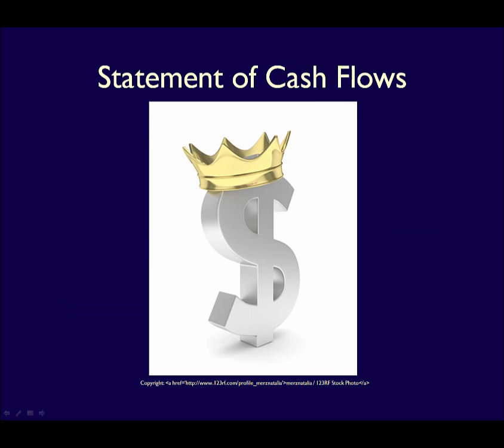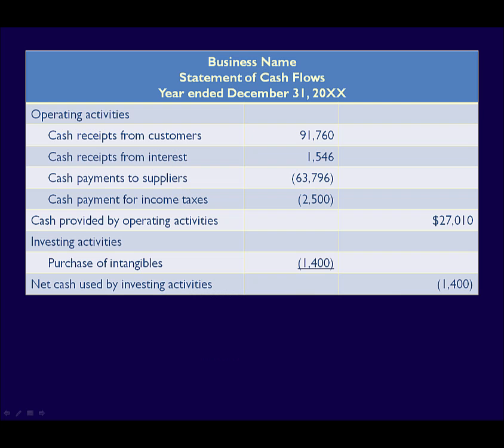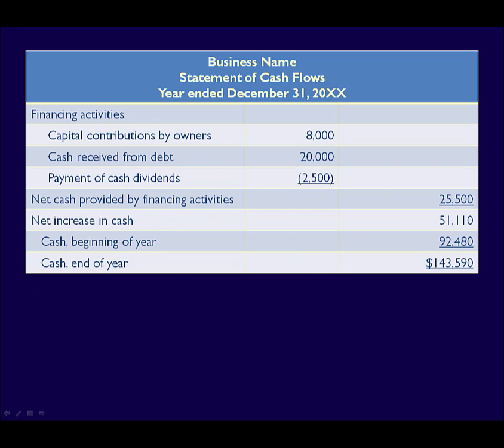We have now explained how the cash balance changed over time using the three business activities. Let's take a final look at the whole statement of cash flows. We started with the title, then listed the operating activities with a subtotal, then the investing activities with a subtotal, and finally the financing activities with a subtotal. By adding all the subtotals of each activity together, we determined the net change in cash. Add or deduct it from the opening cash balance to get the closing cash balance for the current year.